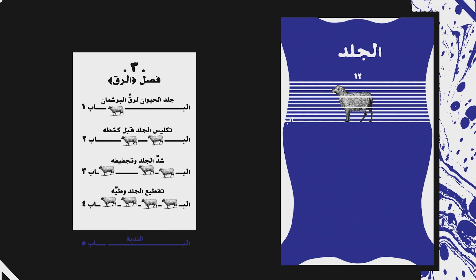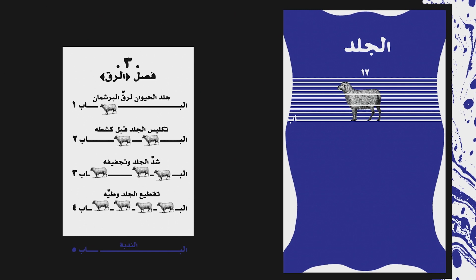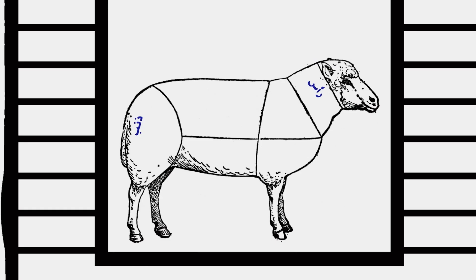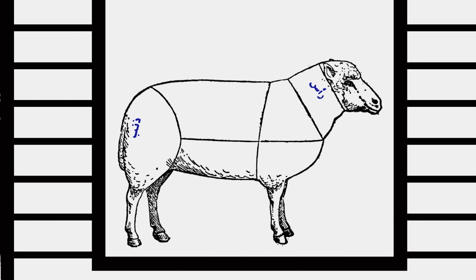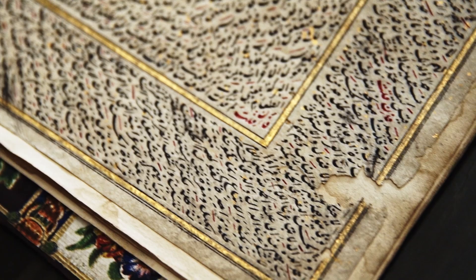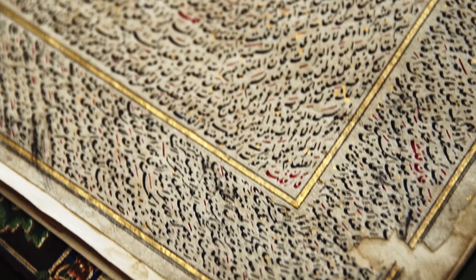How many sheep do you need to create a Qur'an? The standard format of paper is rectangular because it resembles the rectangular shape of the animal belly, which is how parchment was originally made.